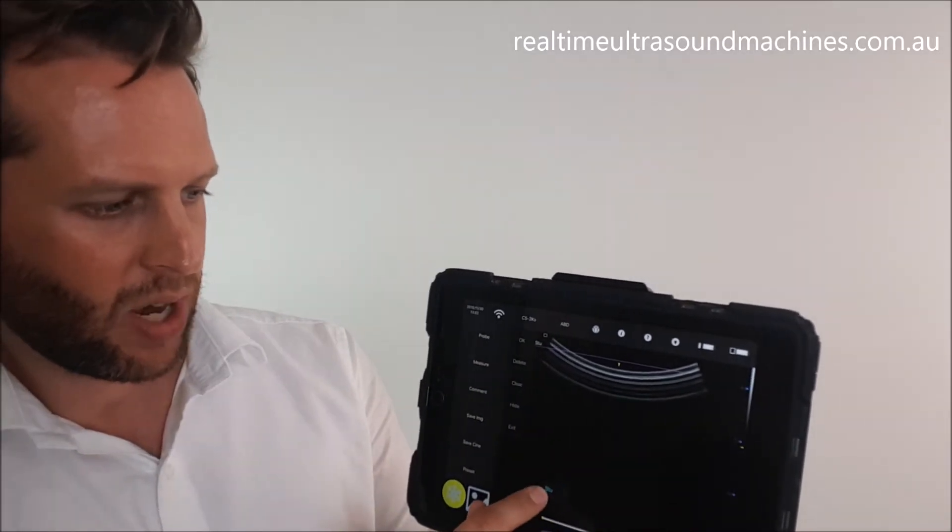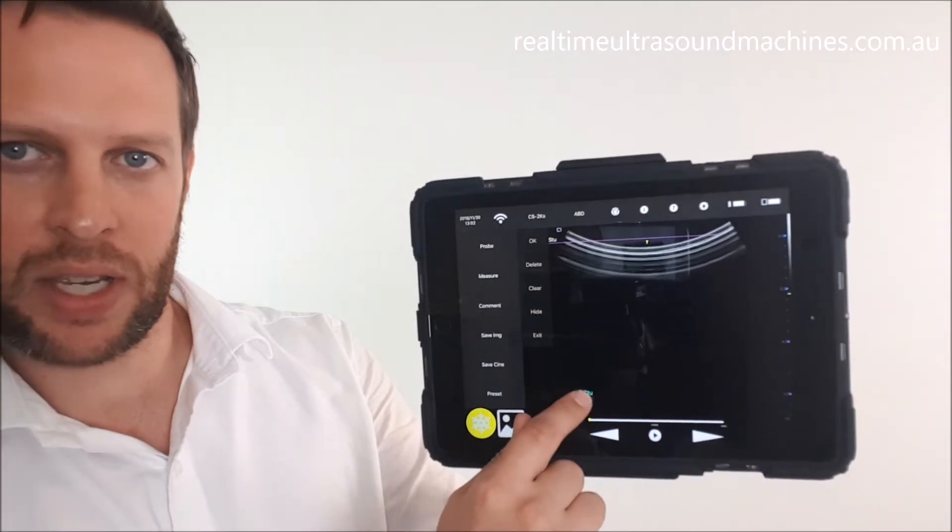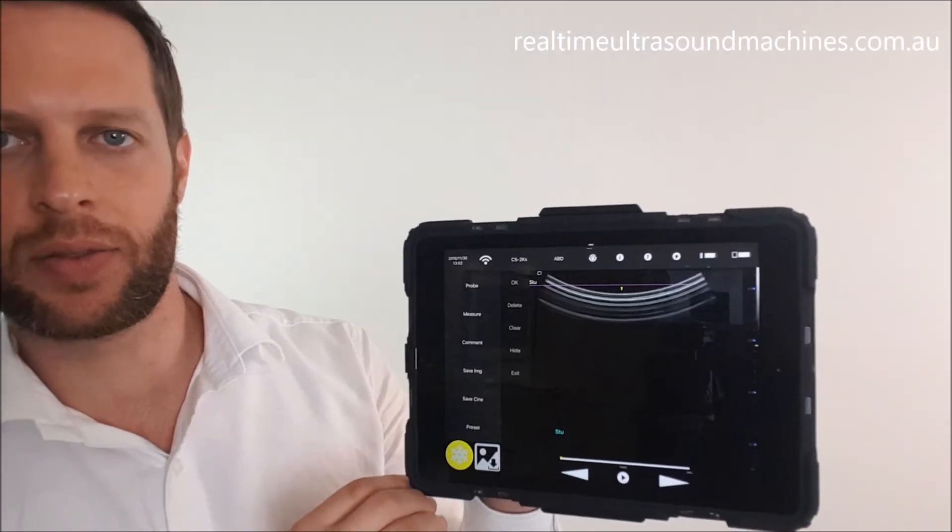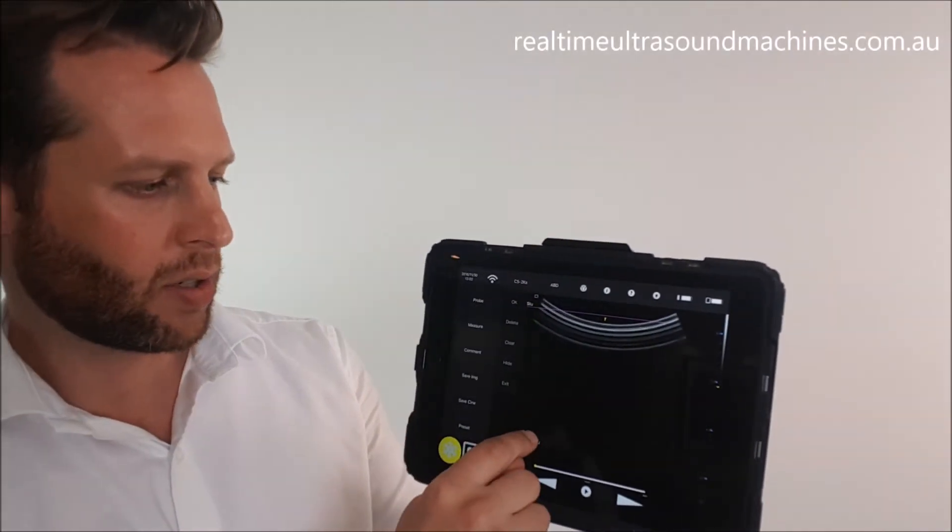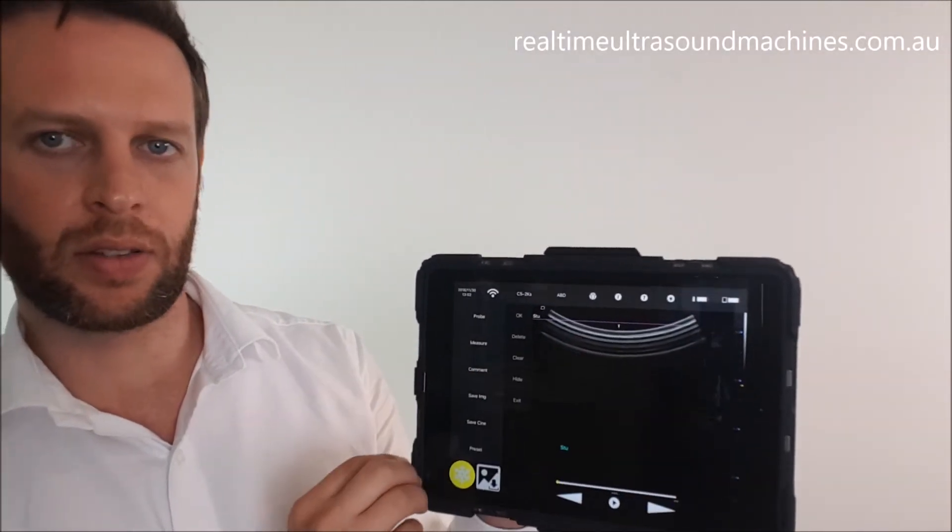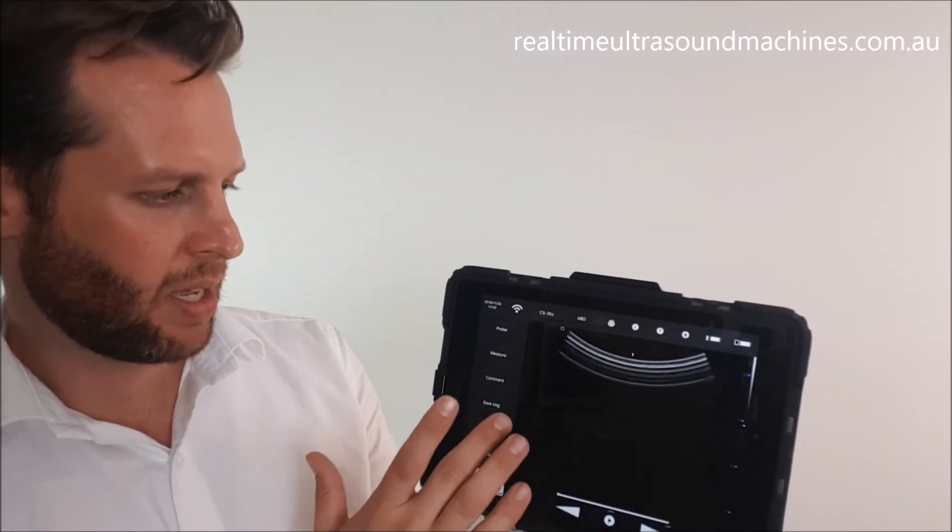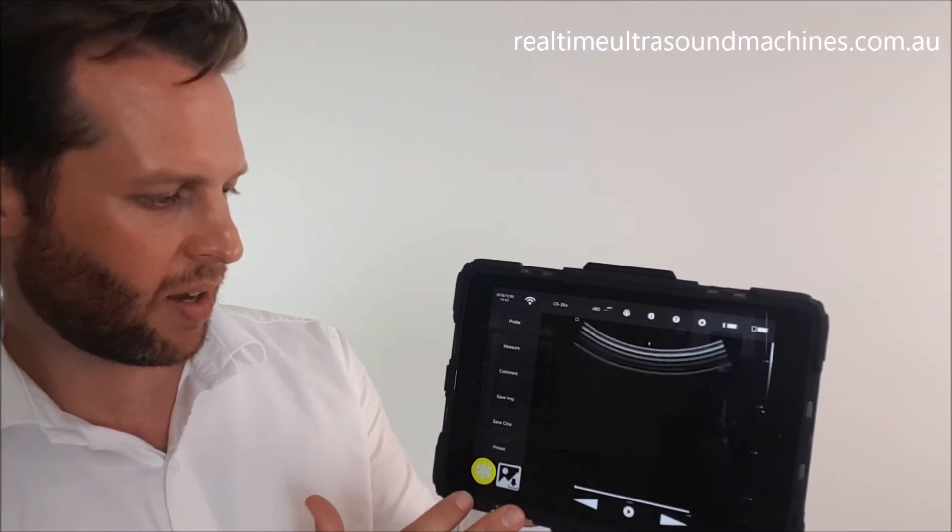We'll have the name here - we can drag that down to the bottom of the screen. I can hit save image and that image will save with my details on it, or of course you can make a comment about whatever you're looking at. To get out of this menu, you can hit clear, hit exit, and then unfreeze.